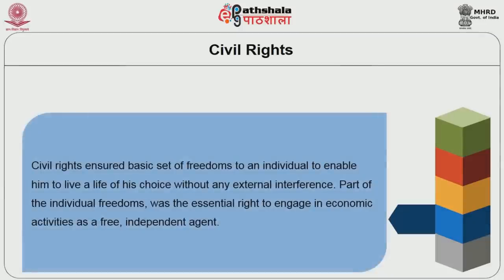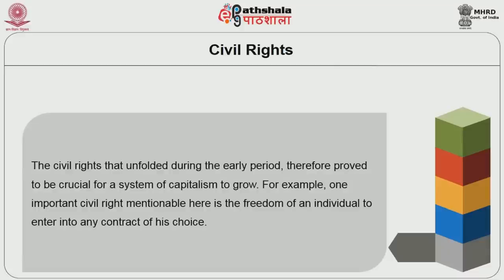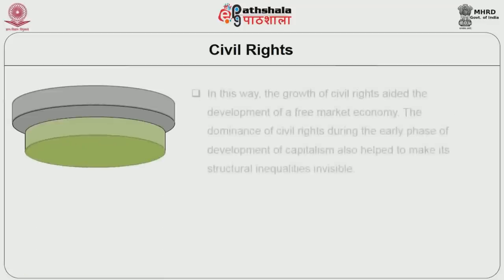Civil rights ensured a basic set of freedoms to an individual to enable him to live a life of his choice without any external interference. Part of the individual freedoms was the essential right to engage in economic activities as a free independent agent. The civil rights that unfolded during the early period therefore proved to be crucial for the system of capitalism to grow. One important civil right mentionable here is the freedom of an individual to enter into any contract of his choice. One essential feature of capitalism is the modern contract between free and equal economic agents. Therefore, the initial phase of evolution of citizenship as a system of equality provided a basis for the unequal system of capitalism to grow.